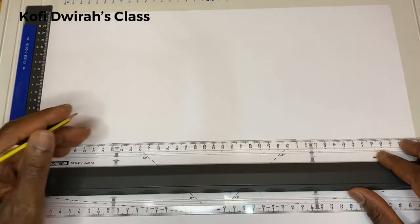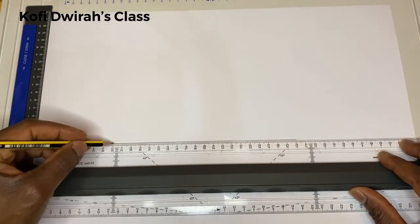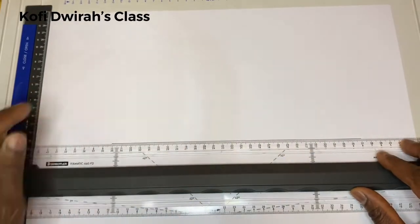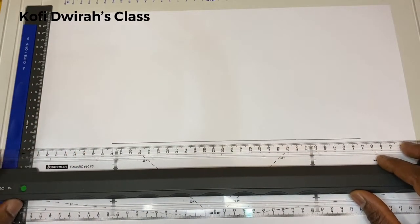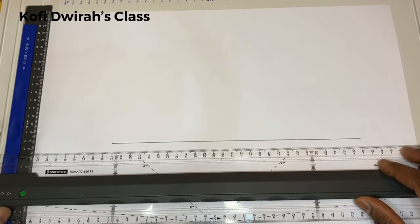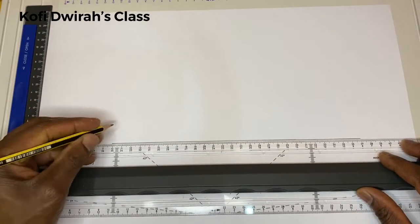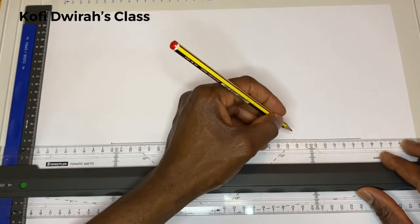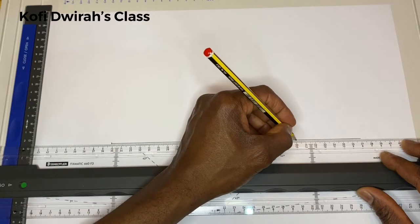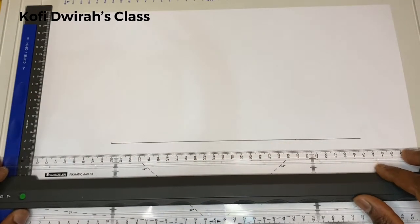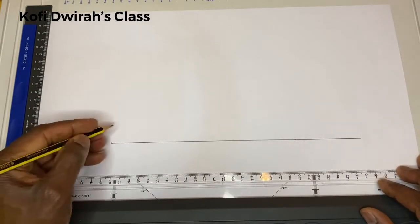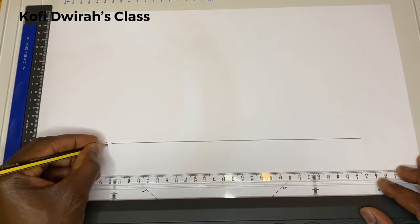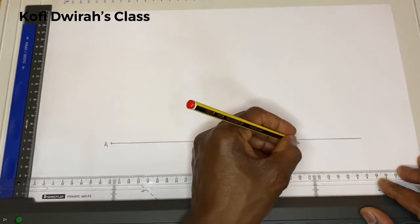We extend the line and measure 20 centimeters from this point. We have point A and point B, which are 20 centimeters apart.